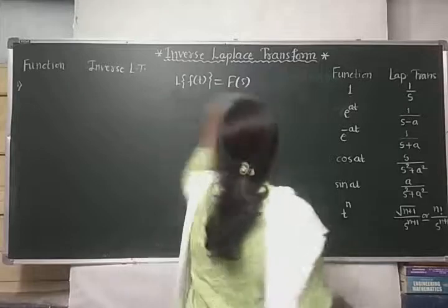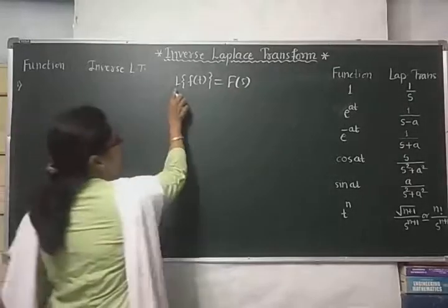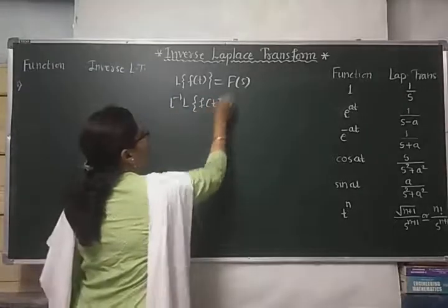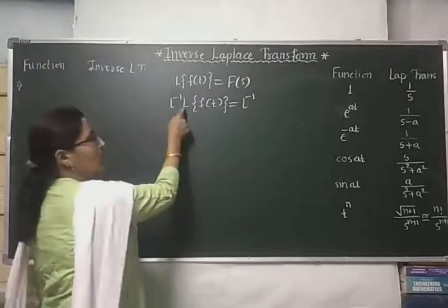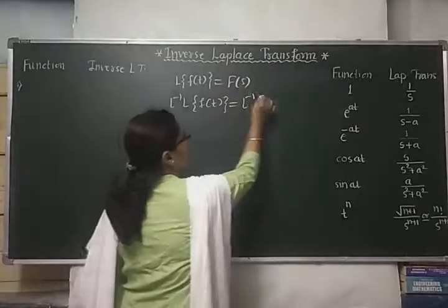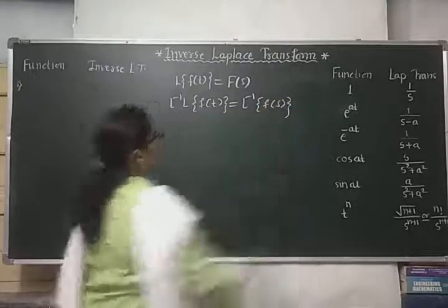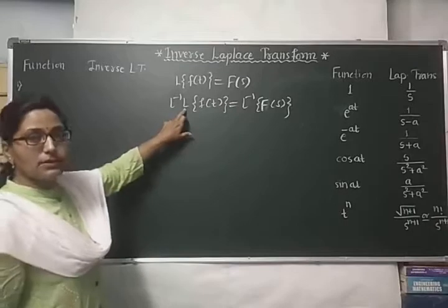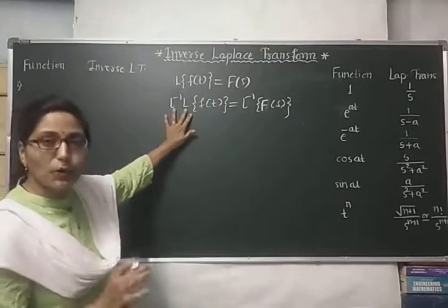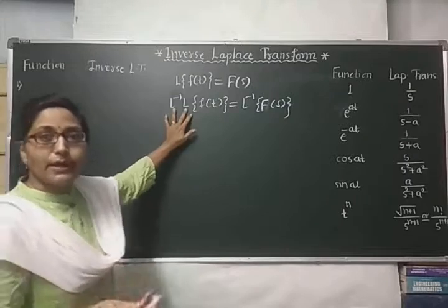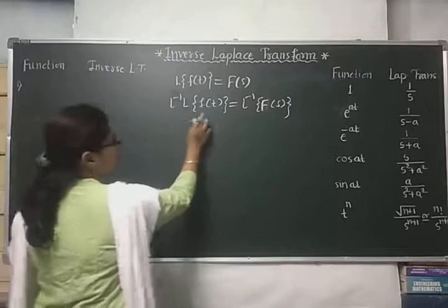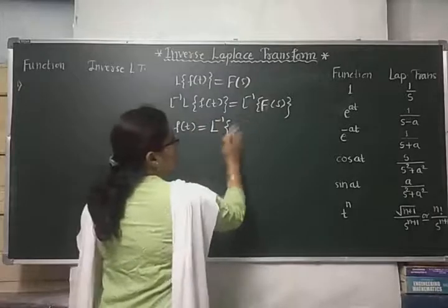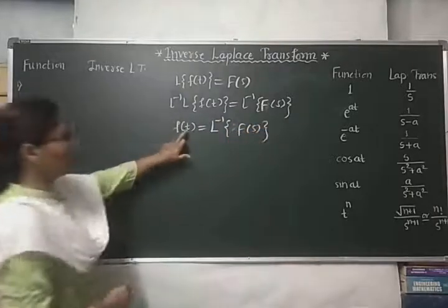Now, what about inverse Laplace transform? If we apply the Laplace inverse on both sides, we get L inverse of L{f(t)} equals L inverse of F(s). Since the Laplace inverse and Laplace operators cancel each other when applied simultaneously, we simply get f(t). And that is why the Laplace inverse of F(s) is denoted by f(t).